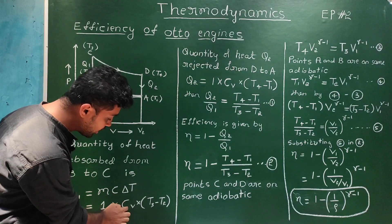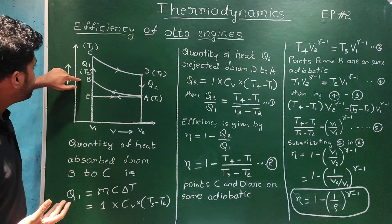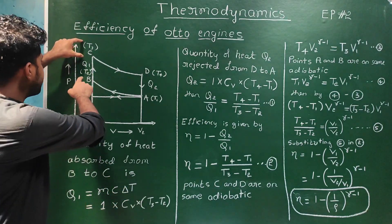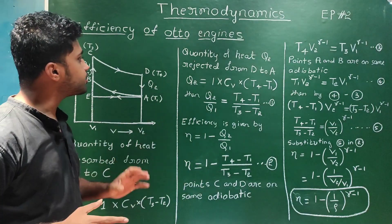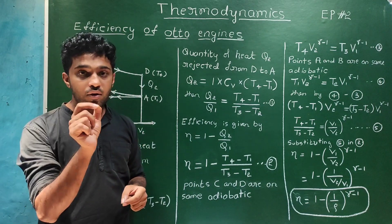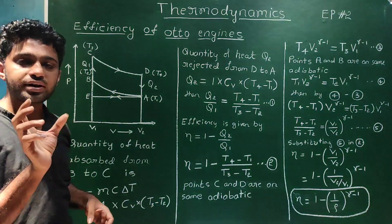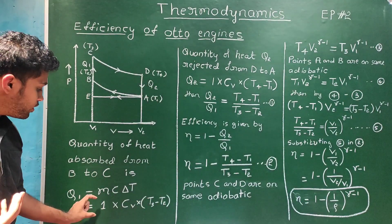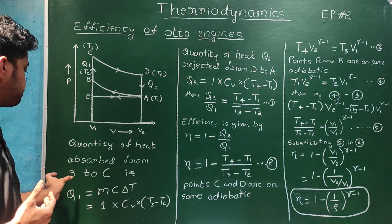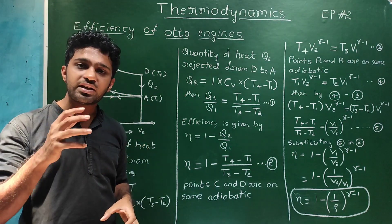Cv represents specific heat at constant volume. The change in temperature delta T from B to C is T3 minus T2. So the quantity of heat absorbed Q1 is given by: Q1 = 1 × Cv × (T3 − T2). This is the heat absorbed from B to C when the spark produces ignition and fuel burns, generating heat energy stored in the cylinder.